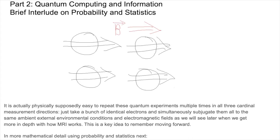It is actually physically supposedly easy to repeat these quantum experiments multiple times in all three cardinal measurement directions. Just take a bunch of identical electrons and simultaneously subjugate them all to the same ambient external environmental conditions and electromagnetic fields, as we will see later when we get more in depth with how MRI works. This is a key idea to remember moving forward.